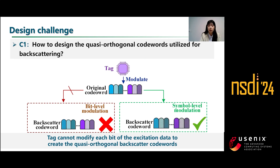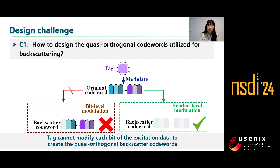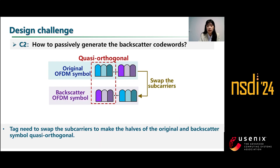To design O-Scatter, we must overcome several challenges. The first challenge is how to design the quasi-orthogonal cohorts for backscattering. Intuitively, we could modify each bit of the original cohort to create the backscatter cohort; however, this requires bit-level modulation. Since excitation data in a typical OFDM system is only independent in the frequency domain and overlaps in the time domain, a passive tag can only conduct symbol-level modulation. Therefore, backscatter modulation changes the whole OFDM symbol instead of only one subcarrier, making it impossible to create quasi-orthogonal cohorts by modifying individual bits.